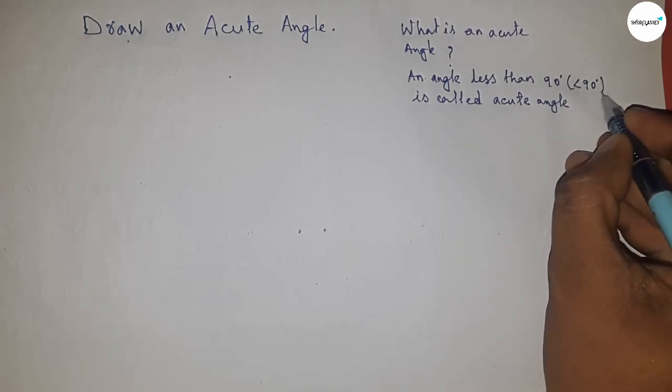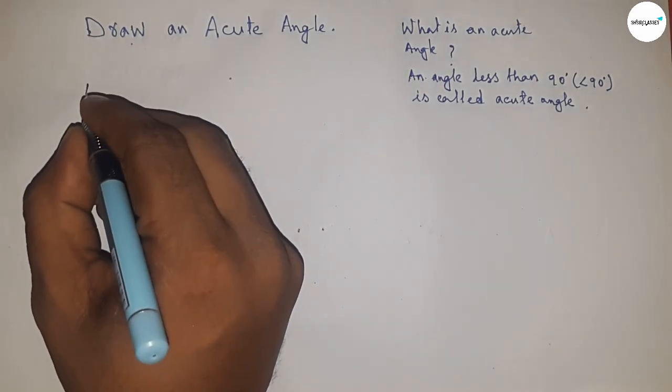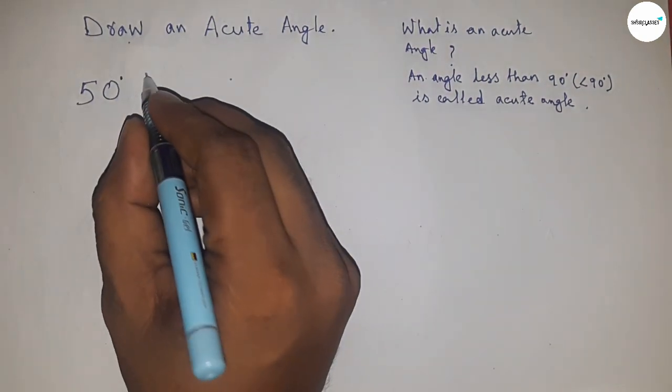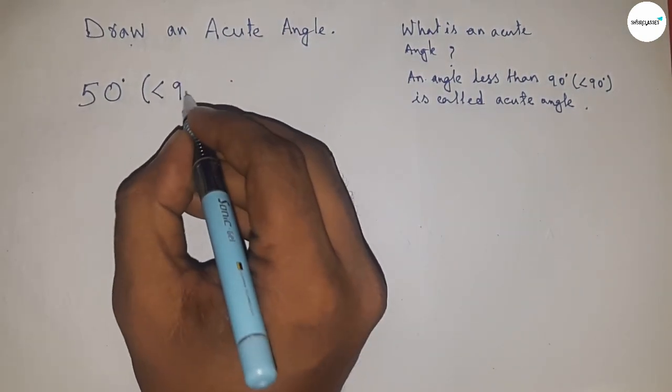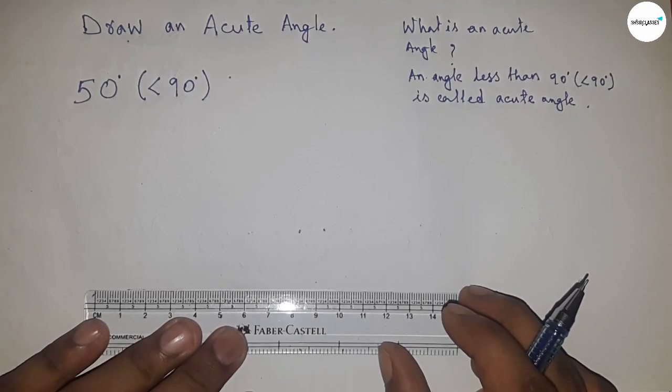This type of angles are called acute angles. For an example, let's take 50 degrees. This is also an acute angle which is less than 90 degrees. Now let's draw the angle by using a protractor.